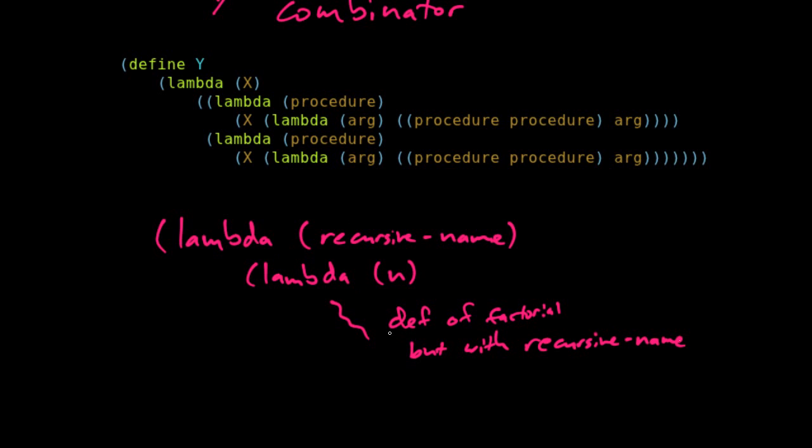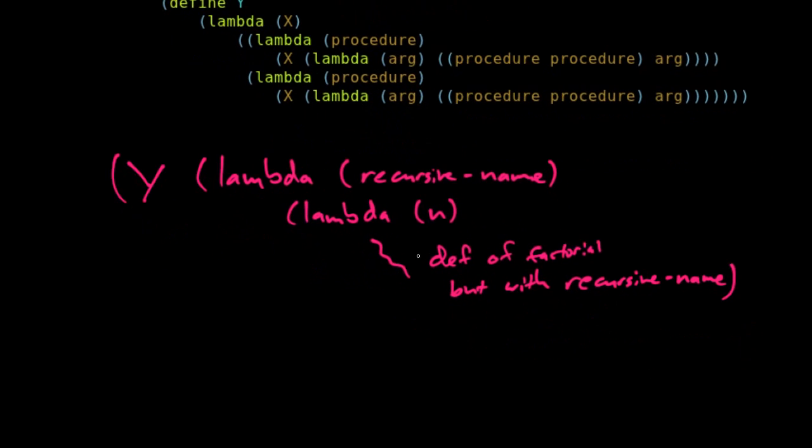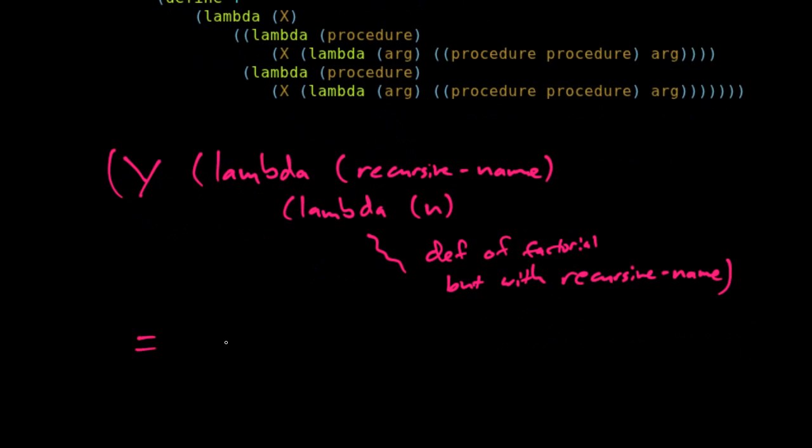And so this double lambda expression is now fully anonymous, because I'm just referring here in recursive name. I'm just referring to one of the arguments, so that's not talking about the name of the function itself. So now I have this double lambda expression. If I do Y of that double lambda expression, that will actually be an anonymous recursive function.